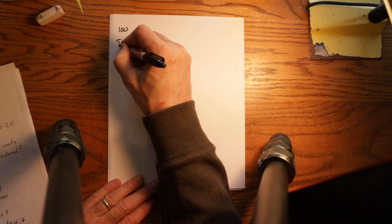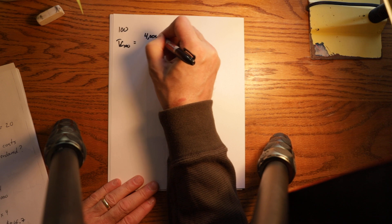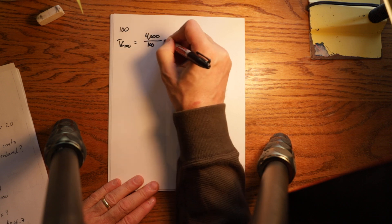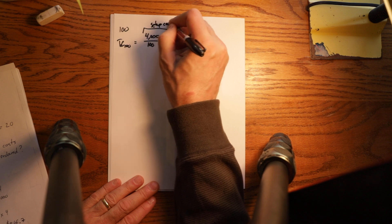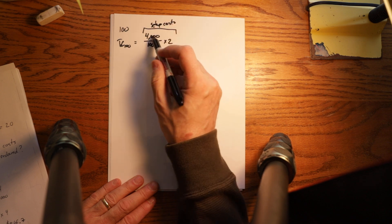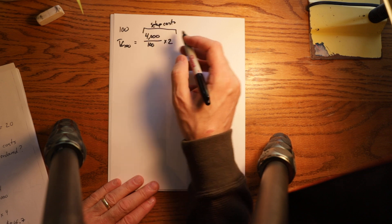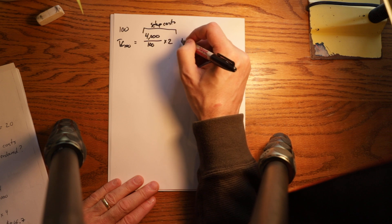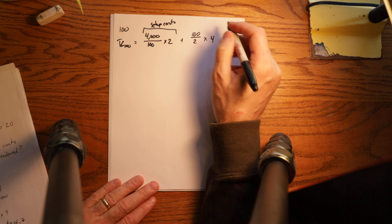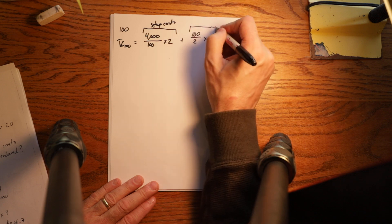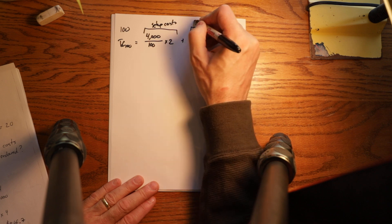So total cost for 100 is equal to 4,000 divided by 100 times 20. So this would be setup costs. And you notice that because we're ordering fewer at a time, our setup costs are going to go up because we're going to make more orders. Plus 100 over 2 times 4. So this is going to go down because our average inventory is going to go down. This is holding costs.